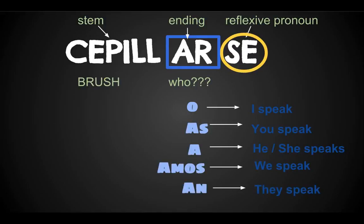It should say 'I brush' instead of 'I speak.' But you have o, as, a, amos, an to tell that I am the one brushing my teeth, or you are the one brushing your teeth.